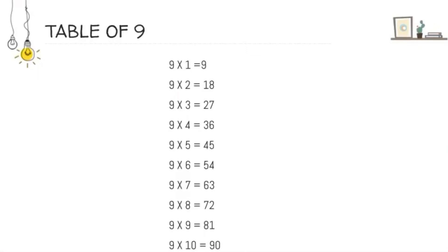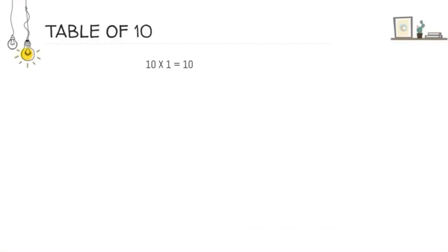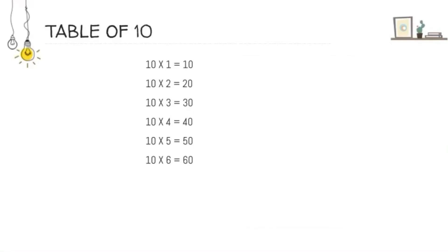Next one is table of 10. 10 1's are 10. 10 2's are 20. 10 3's are 30. 10 4's are 40. 10 5's are 50. 10 6's are 60. 10 7's are 70. 10 8's are 80. 10 9's are 90. And 10 10's are 100.